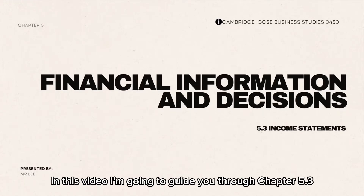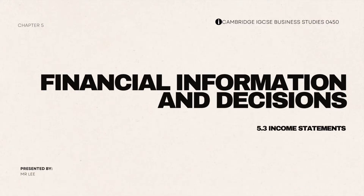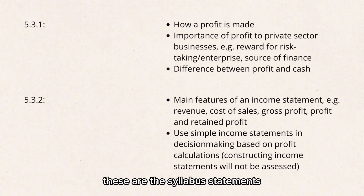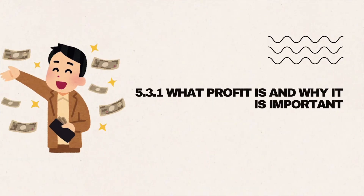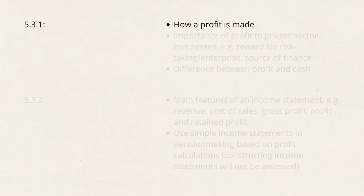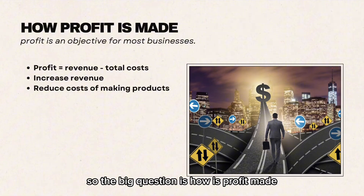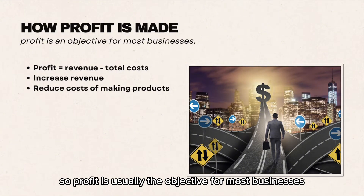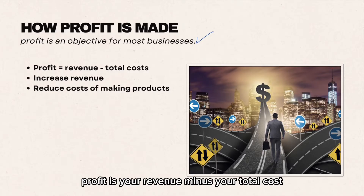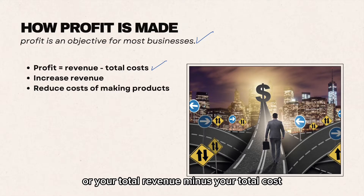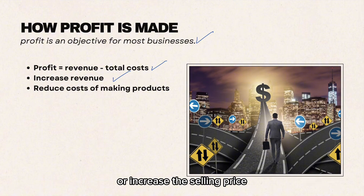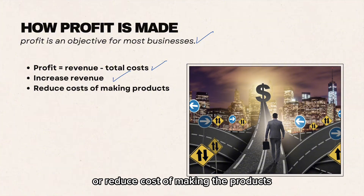In this video I'm going to guide you through chapter 5.3 income statement. The big question is how is profit made. Profit is usually the objective for most businesses — profit is your revenue minus your total costs. A way to increase profit is to increase revenue, increase the selling price, or reduce costs of making the products.